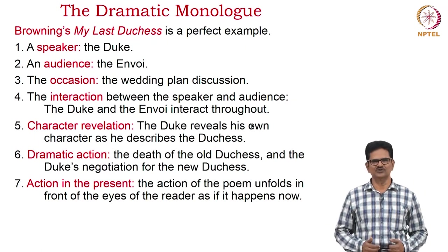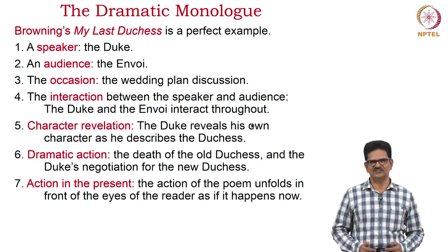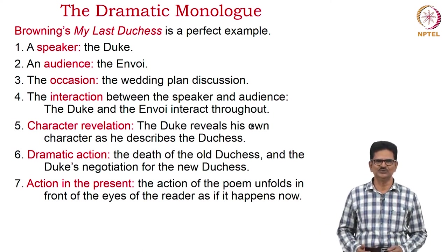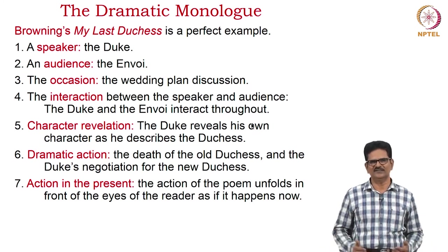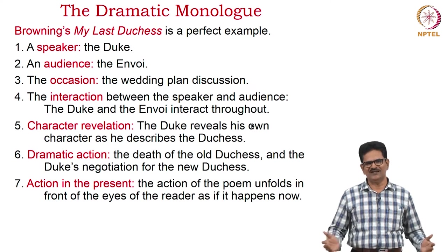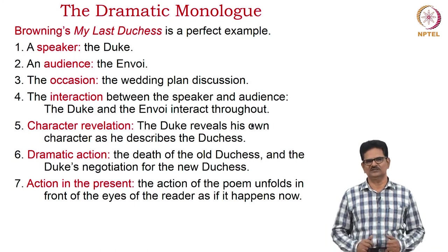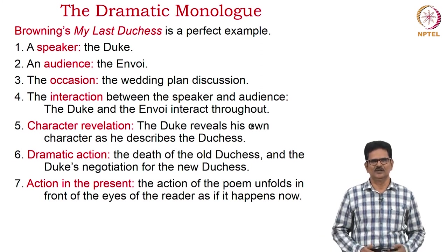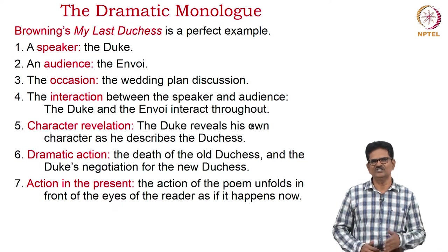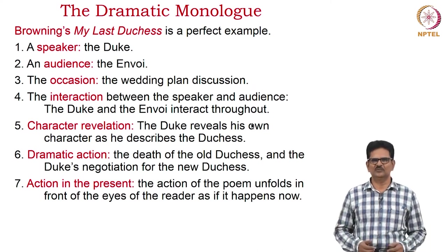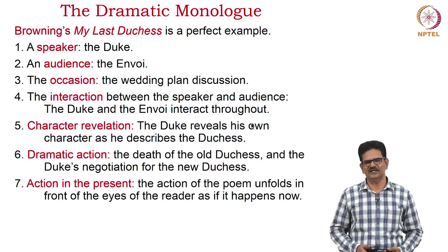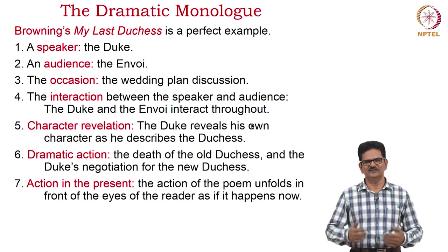The example we have chosen is Browning's My Last Duchess, which has all these seven features. The speaker is a duke. The audience is the envoy, that is, a messenger. The occasion is a wedding plan discussion of the duke with the envoy. The interaction between the speaker and the audience — the duke and the envoy — takes place throughout the poem. We have the character revelation of the duke as well as the duchess. Then we have the dramatic action of the death of the duchess, which led to finding a new duchess for the duke. The whole action takes place in the present, unfolded before the eyes of the reader as it happens as we read the poem.